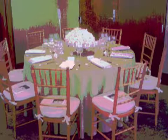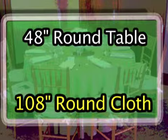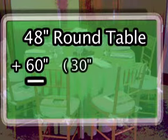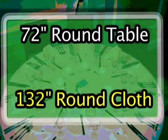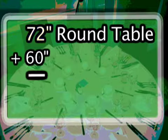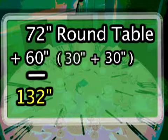Here are more examples of round cloths. A 48 inch round table gets a 108 inch round cloth, because the 48 inch diameter plus 60 inches — 30 inches height plus 30 inches height — equals 108 inches. A 72 inch round table gets a 132 inch round cloth, because the 72 inch diameter plus 60 inches equals 132 inches.